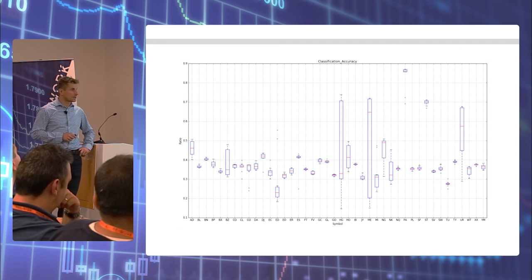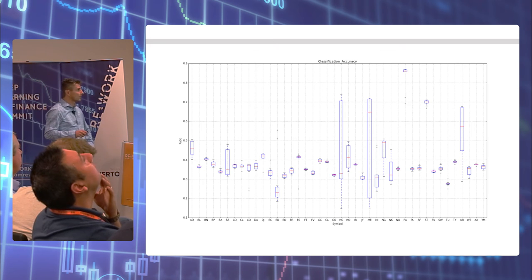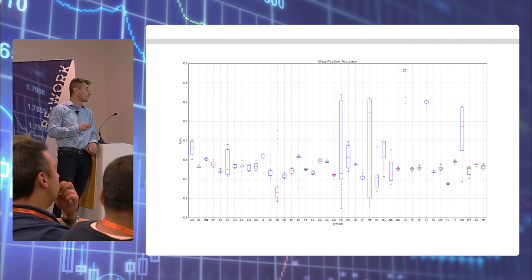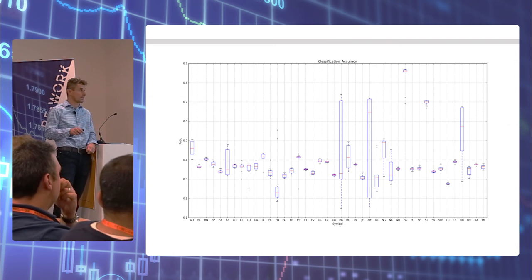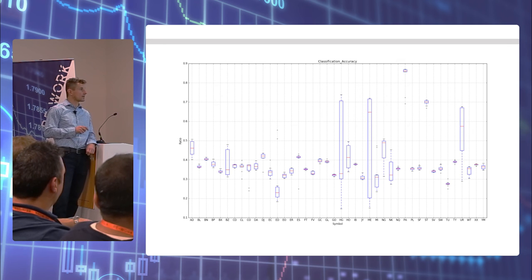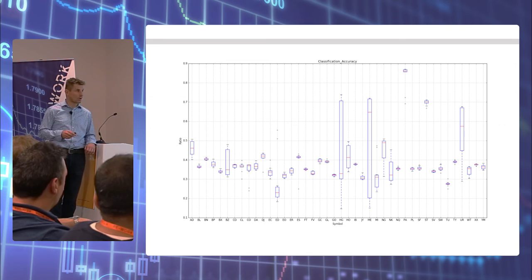Looking at F1 scores across a subset of different symbols shown as box plots, they hover around 0.35. Some symbols have a median much higher than the average, while a few symbols perform lower.